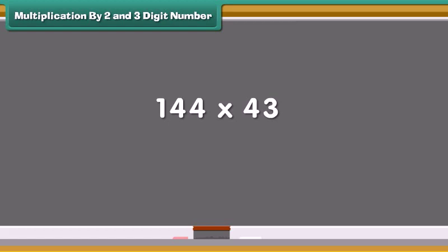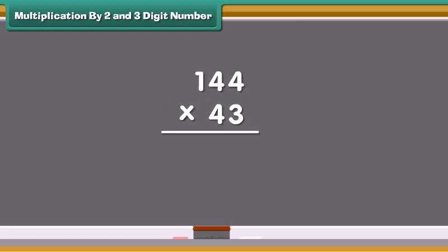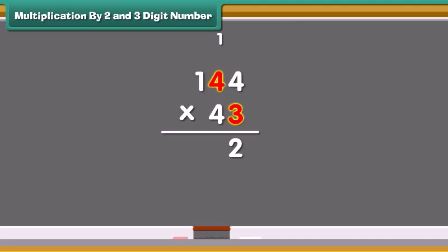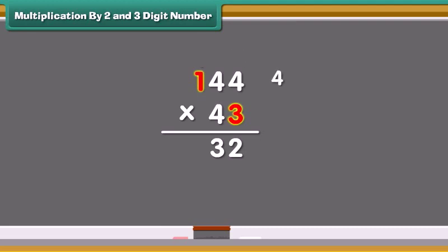Let us multiply 144 by 43. Start multiplication from the one's place. 3 times 4 is 12. Write 2 in the one's place and carry the 1 forward to the tens place. 3 times 4 equals 12, and add 1 which was carried forward, that is equal to 13. Write 3 in the tens place and carry the 1 forward to the hundreds place. Multiply 3 with the number on the hundreds place and add 1 carried forward. We write 4 in the hundreds place.